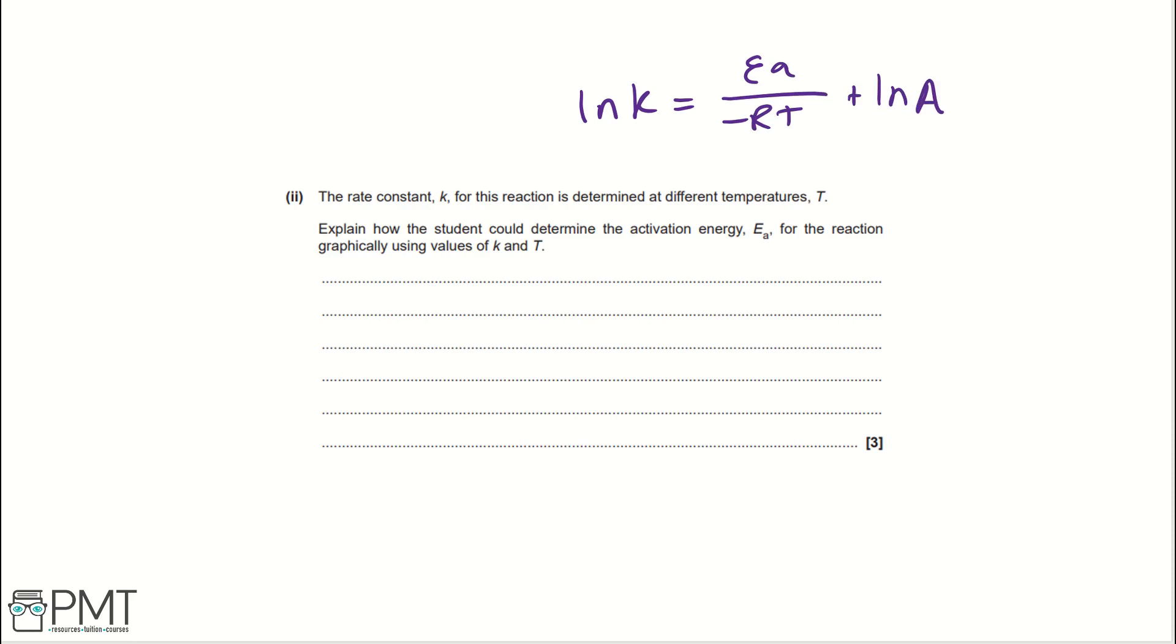So, our first thing when answering this question that we need to do is tell the student to plot lnK against 1 over T. And that means that our gradient will be EA over minus R. So, find gradient, and then we could also write in brackets what the gradient is, EA over minus R. And finally, to get EA, we need to times gradient by minus R, which is a value given in the data sheet, so you don't need to specify. But then you can write that it equals EA.